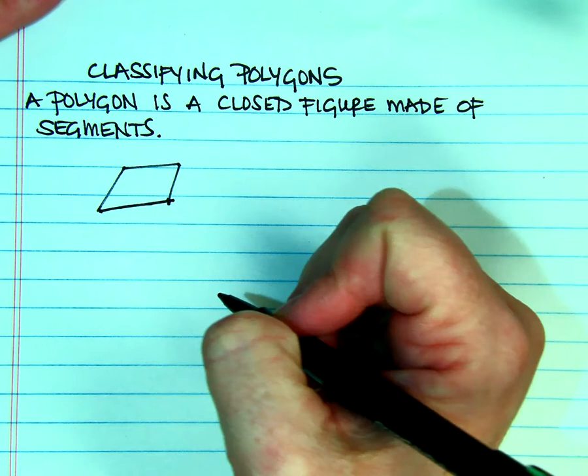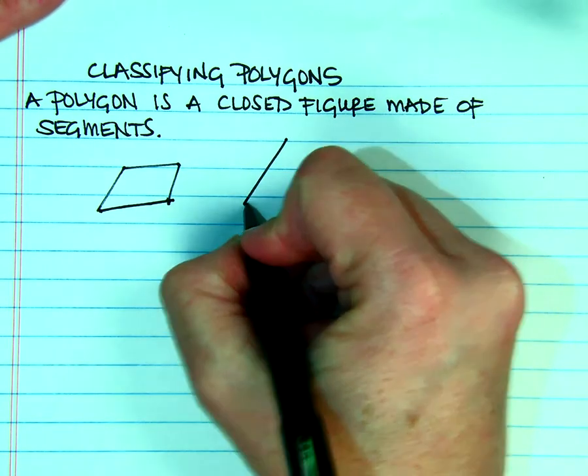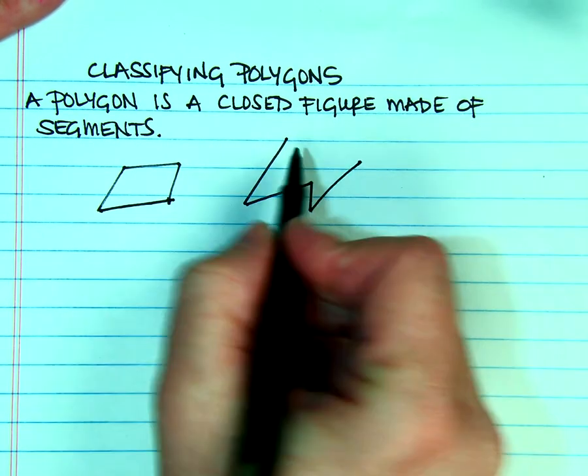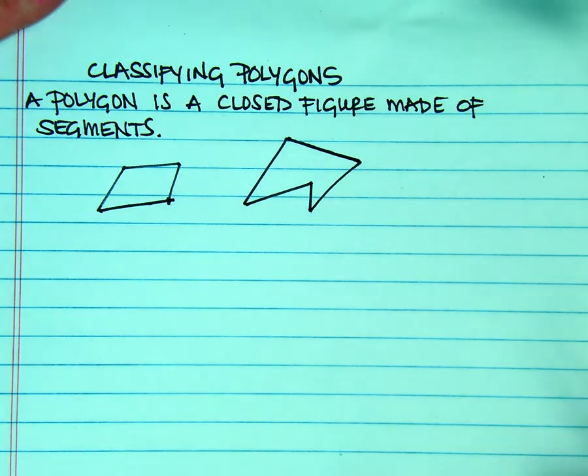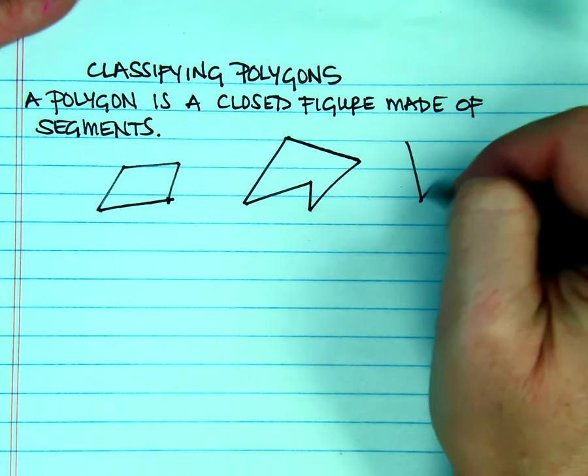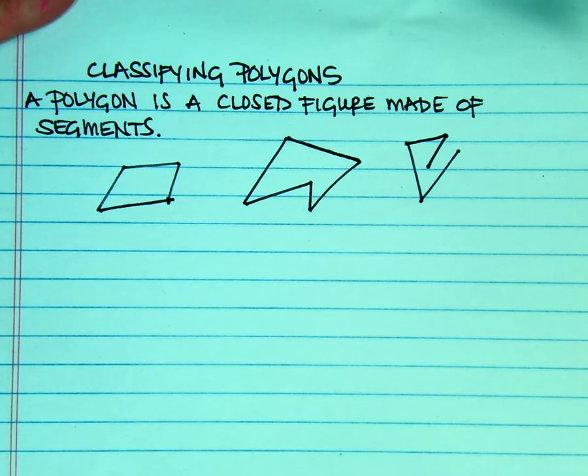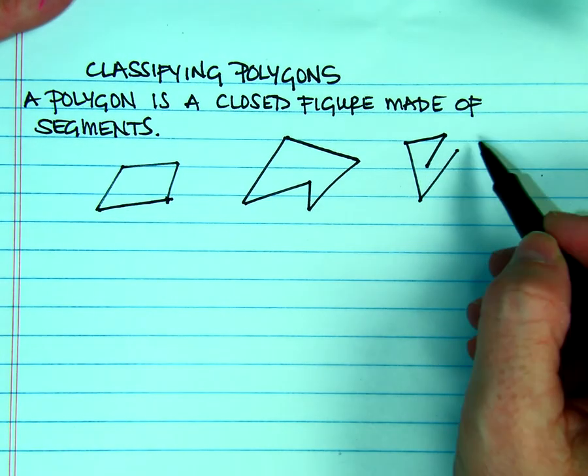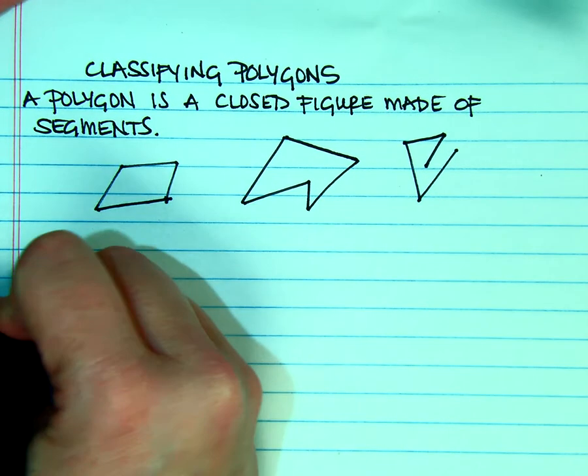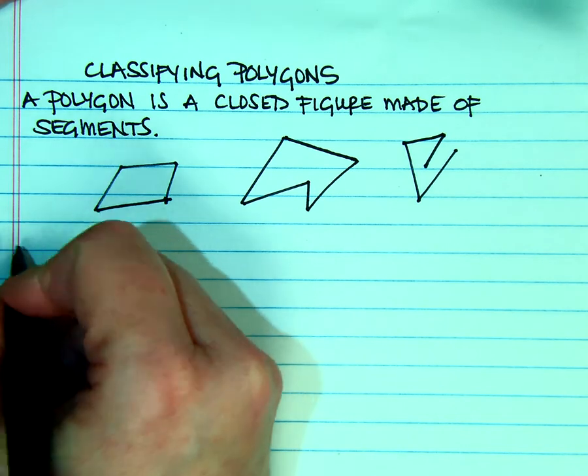So this would be a polygon. This would also be a polygon. That would not be a polygon because it is not closed. We have different types of polygons.